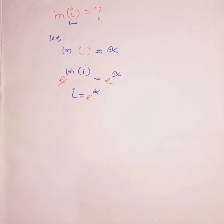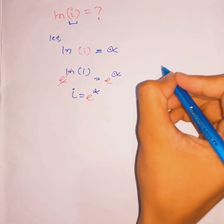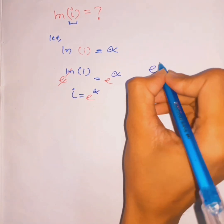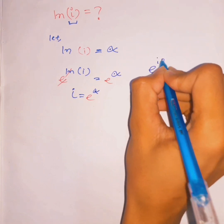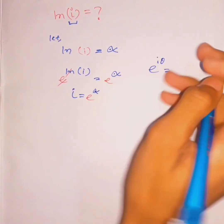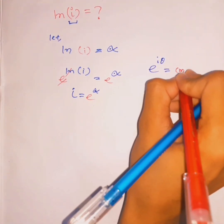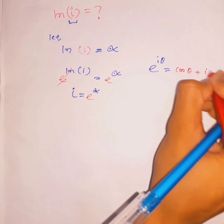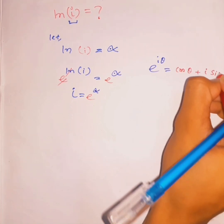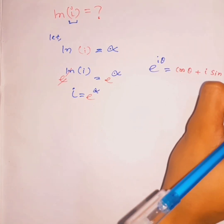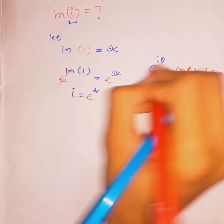Now take a look at Euler's identity. From Euler's identity we know that e^(iθ) is equal to cosine(θ) plus i times sine(θ).